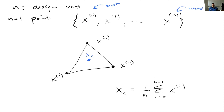The key idea here is that we don't have one point anymore like with gradient-based. We have n+1 points forming this tetrahedron, and we're going to move it around to find our optimum. These are ordered from best to worst — x0 is best, xn is worst.